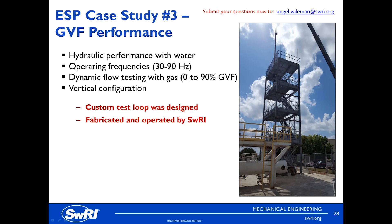For the third case study, the ESP manufacturer was looking to confirm observations from a field installation for their novel ESP that was relatively new to market. This product was expected to address a range of conventional ESP production issues, including slugging wells, high gas content fluid, high sand content, and heavy oil, while not requiring significant modifications to existing ESP installations. Basically what they were offering to market was an equal replacement for a conventional ESP that failed in service.